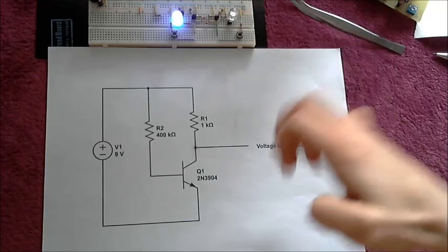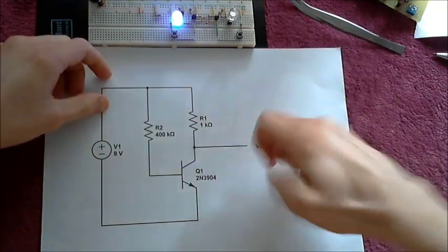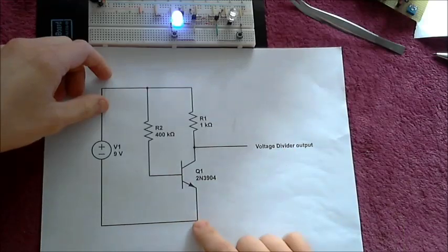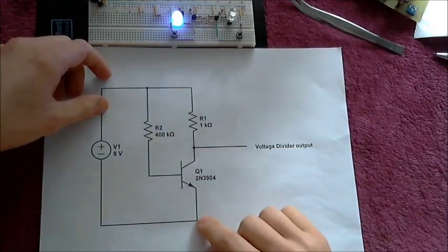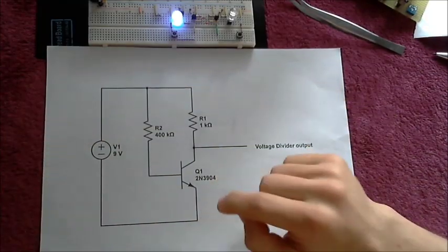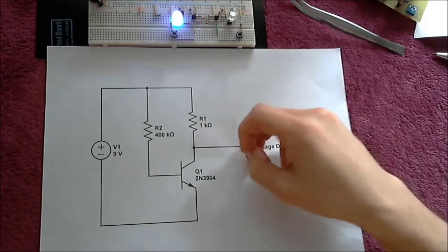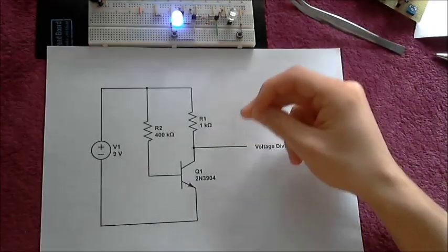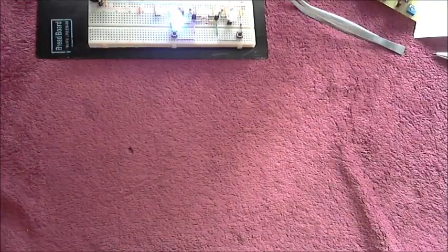If you have 1k and 1 ohm, then the output is going to be almost ground. The collector is going to be almost ground and we call this collector low. So transistor on, collector low; transistor off, collector high.